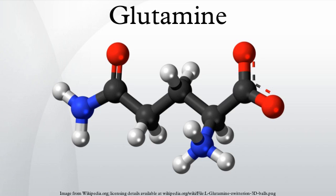Glutamine is the most abundant naturally occurring non-essential amino acid in the human body, and one of the few amino acids that can directly cross the blood-brain barrier. In the body, it is found circulating in the blood as well as stored in the skeletal muscles. It becomes conditionally essential in states of illness or injury.